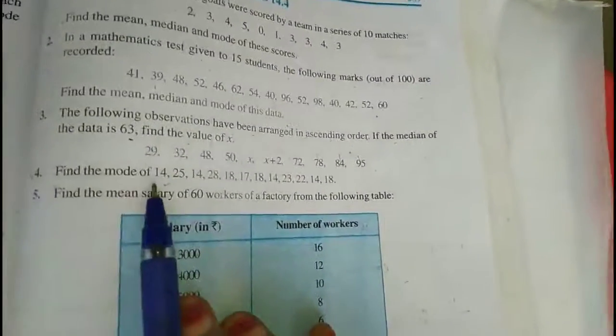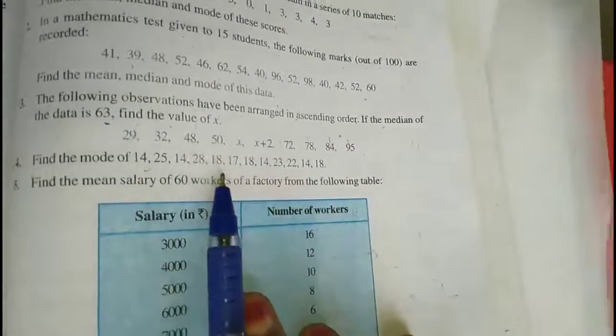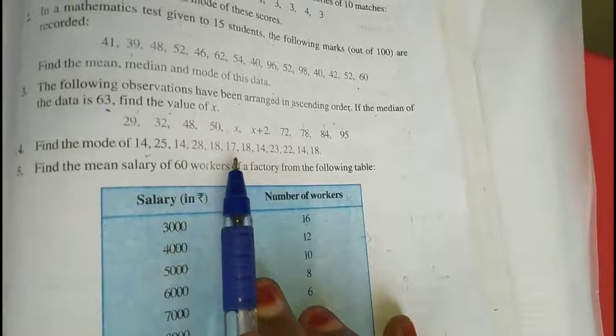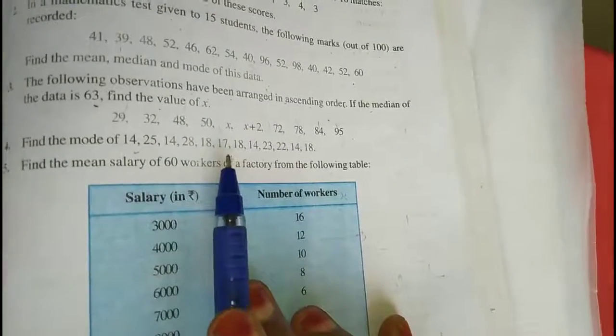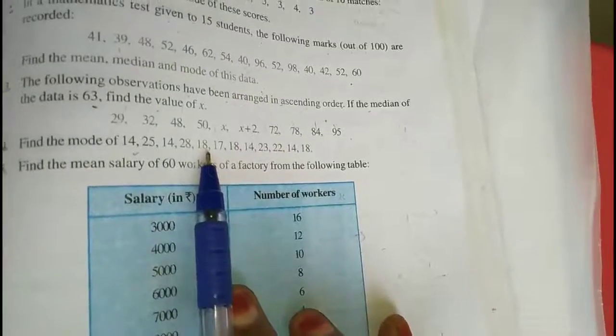The 4th sum is find the mode of 14, 20. They are giving some data. They are telling us to find the mode. Mode means what, dear? Which number is repeated more times, that is the mode. So you have to find the mode for the 4th sum.